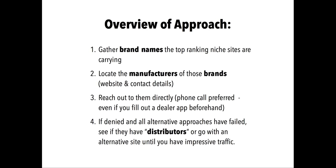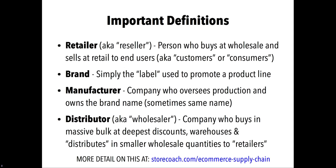Step two is to actually locate the manufacturers of the brands. A manufacturer is the company that oversees the creation of that brand product — for example, Sony. Sometimes the manufacturer's name is the same as the brand name, sometimes not. You want to figure out who owns that brand, find their website and their contact details. Almost always they'll have a website, and pretty much 100% of the time they'll have contact details. Sometimes they even have dealer applications online, which is ideal.